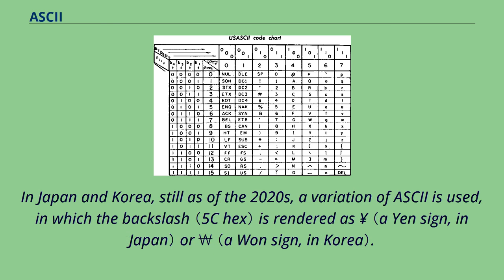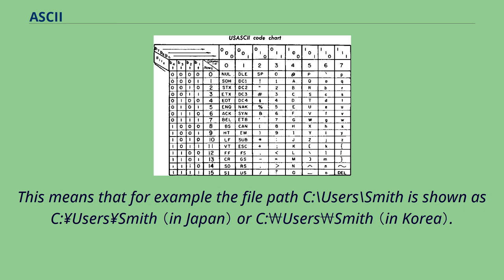In Japan and Korea, still as of the 2020s, a variation of ASCII is used in which the backslash is rendered as yen or Korean won. This means that for example the file path C:\users\smith is shown as C:¥users¥smith or C:₩users₩smith.